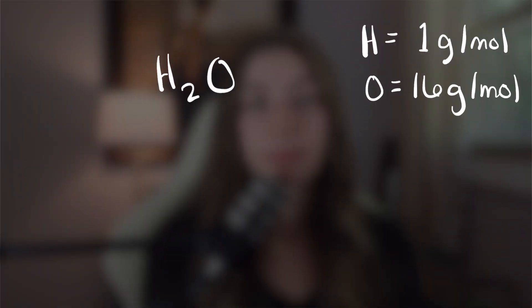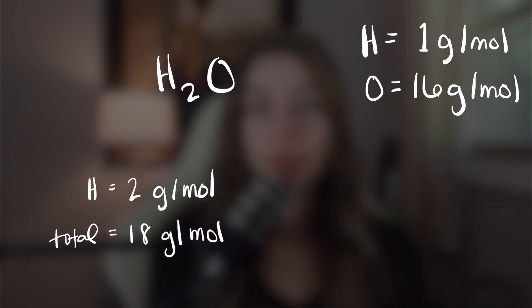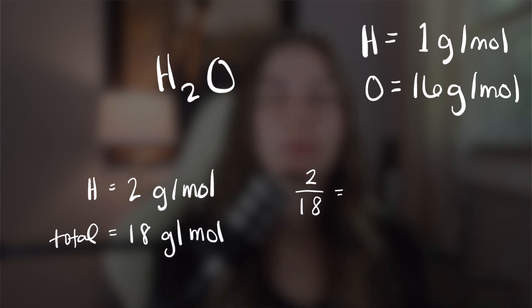Sometimes you'll be asked to calculate percent mass — this is literally asking what percent of the total mass is accounted for by a given element. Take water as an example: what's the percent mass of hydrogen in a water molecule? Hydrogen is 1 gram per mole, and there are two of them, so that's 2 grams per mole total for hydrogen. The total mass is 18 grams per mole. Divide the portion by the whole and you get a little less than 0.1, or about 10 percent.